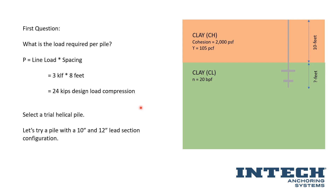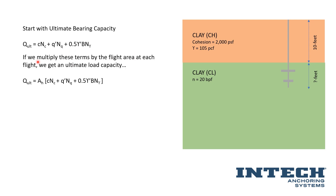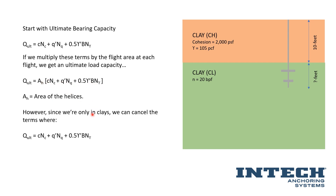We're going to select a trial helical pile with a 10-inch flight and a 12-inch flight on the same pile. We start with the ultimate bearing capacity equation: C·Nc plus the overburden term plus the footing width term. These terms are in pressures, and we multiply them by the flight area at each flight to calculate the bearing capacity at each individual flight. For this specific example, we're penetrating fully into this layer intentionally, so the area of the helices multiplied by the single bearing capacity equation is appropriate since we're in the same material.